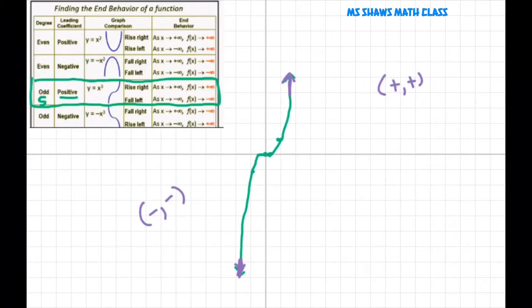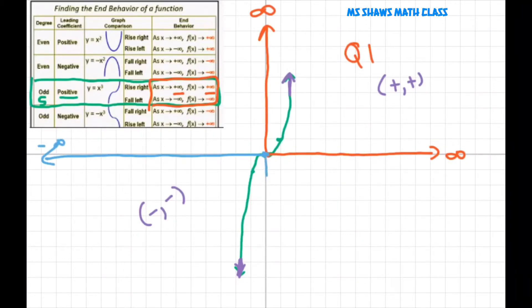And when you write your end behavior like this, basically all you're doing is saying when x values get larger and larger, so do your y values from 0. So that means you're in quadrant 1. This is what this says, positive, positive. Now as x values get smaller and smaller from 0, so do your y values. So that puts you in quadrant 3.